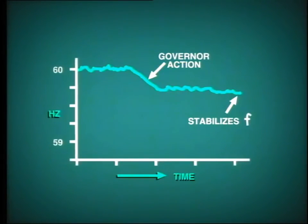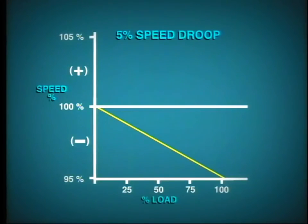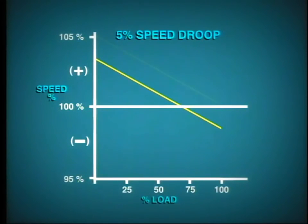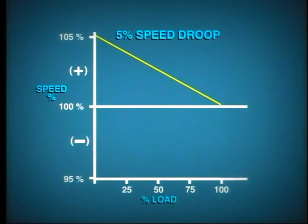However, it is important to note that although each governor moves to stabilize the frequency, it does not return the frequency to its original position. This is due to the regulating characteristic which is built into the governor, known as speed droop. Typically, the turbine governor is set to regulate at 5% speed droop as applied load increases from 0% to 100% power output. Of course, this situation can be corrected easily by adjusting the set point of the governor, which can be done by the operator at various intervals or by automatic frequency control devices.